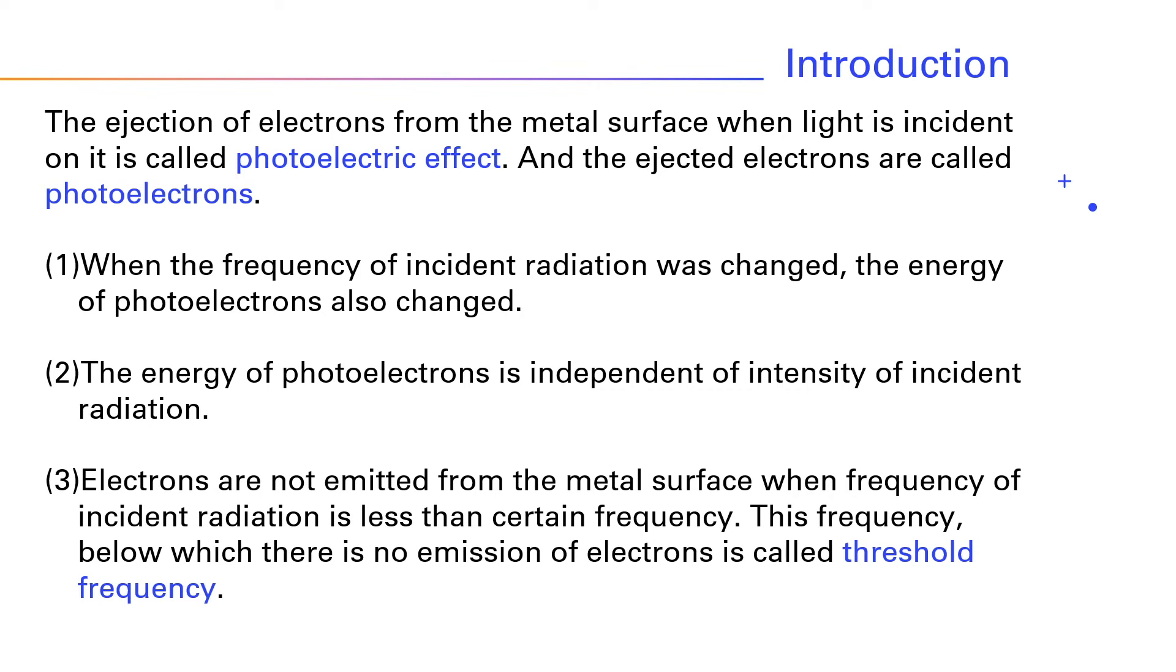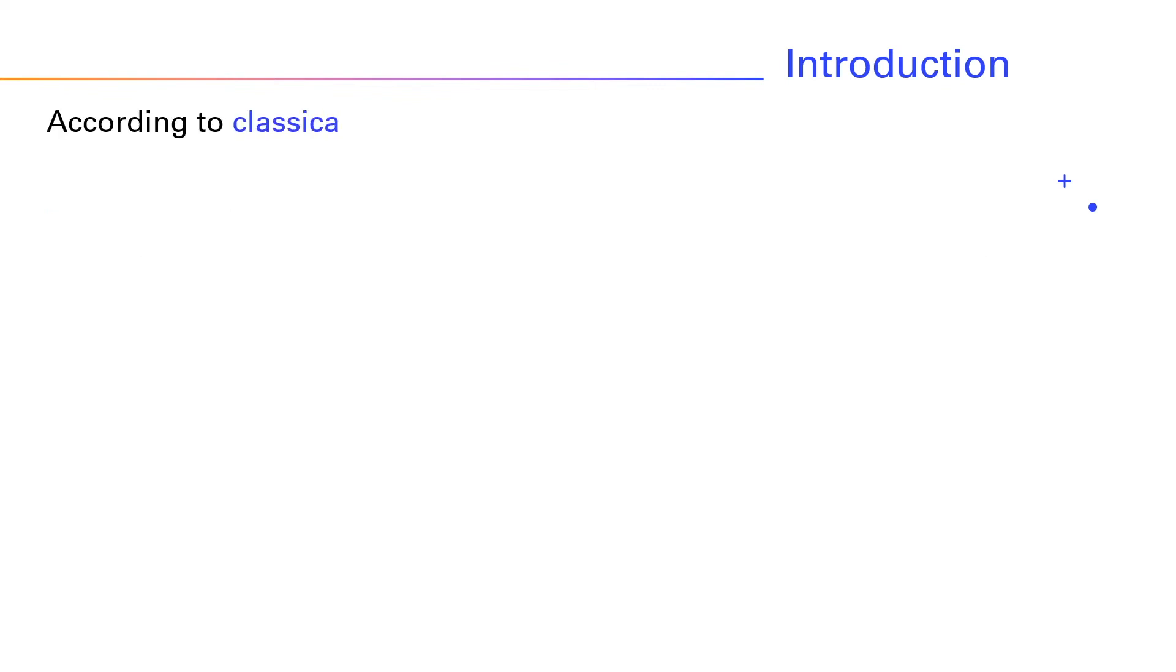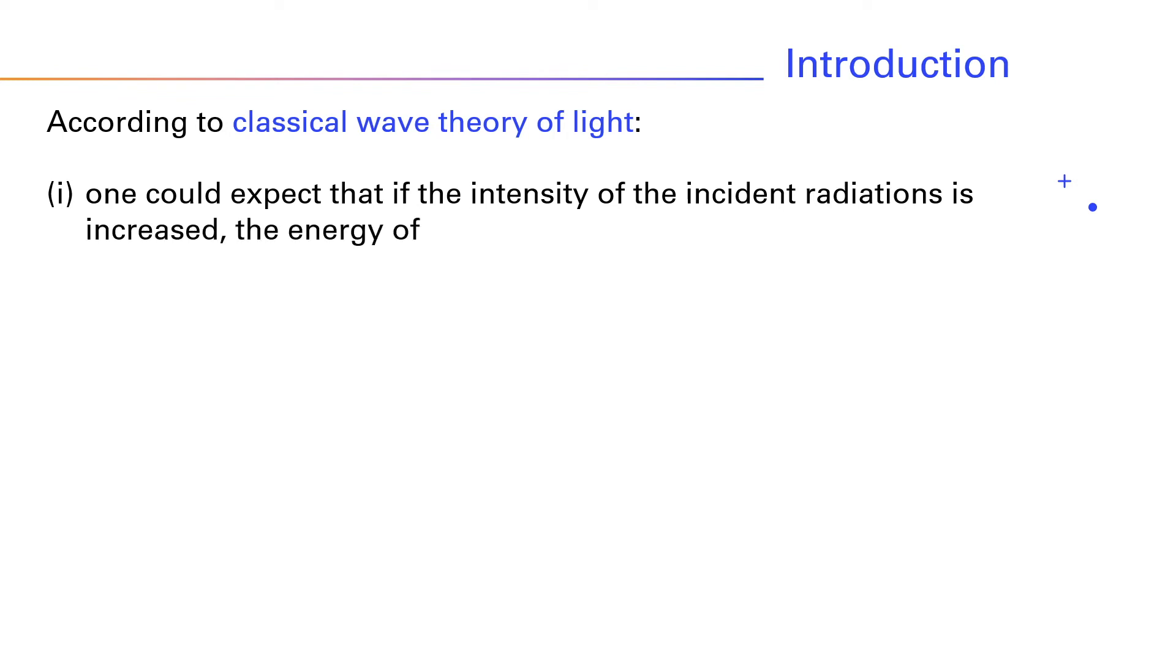These are three major features of the photoelectric effect that could not be explained on the basis of classical wave theory of radiations. According to classical wave theory of light, one could expect that if the intensity of the incident radiations is increased, the energy of the photoelectrons would increase and not their numbers.